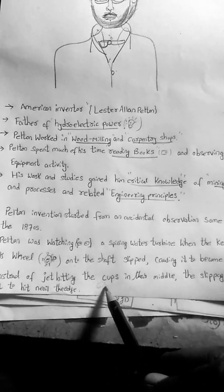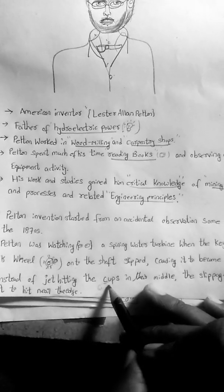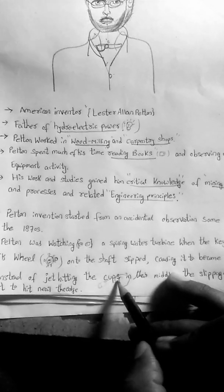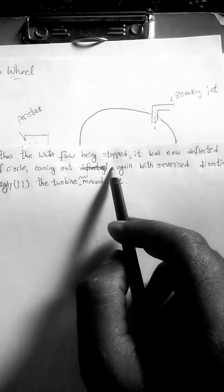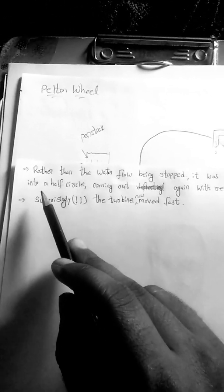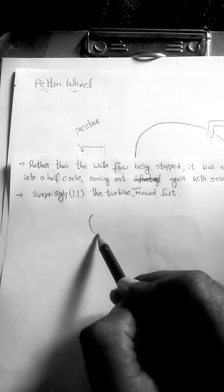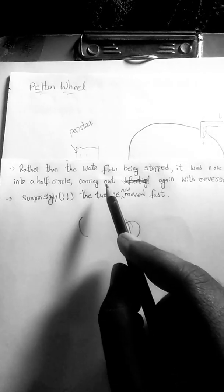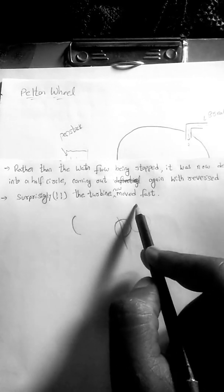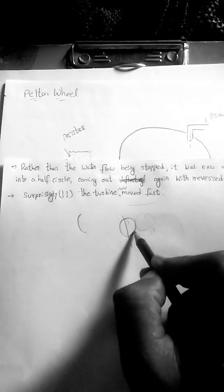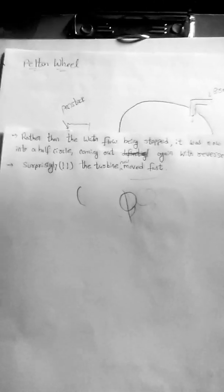Before, it was hitting in the middle, but by this mistake, the cup, which was spoon-shaped, was hit differently. Rather than the water flow being stopped, it was now deflected, striking in a half circle with reverse direction. Surprisingly, the turbine now moved much faster. By accident, the wheel rotated very fast. We will see what this scientist invented.